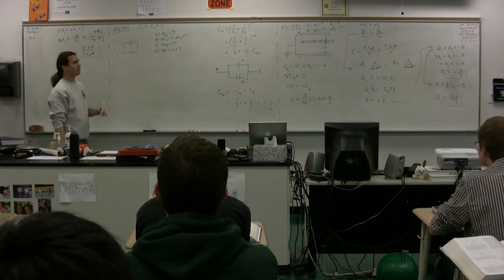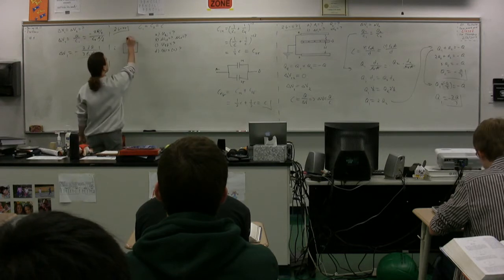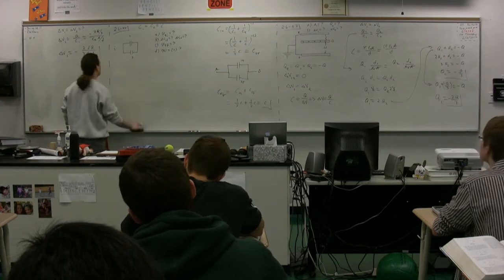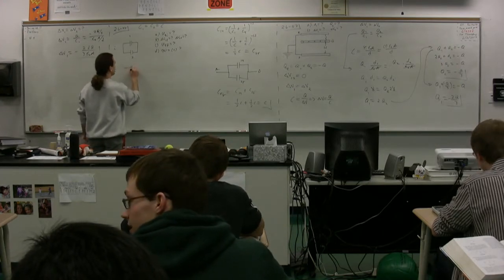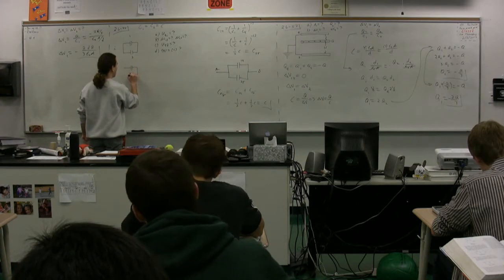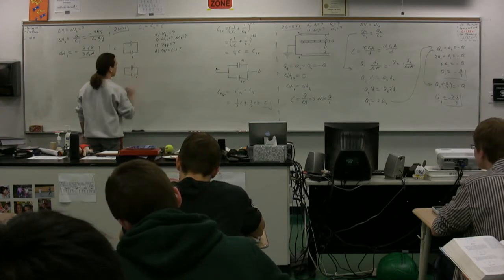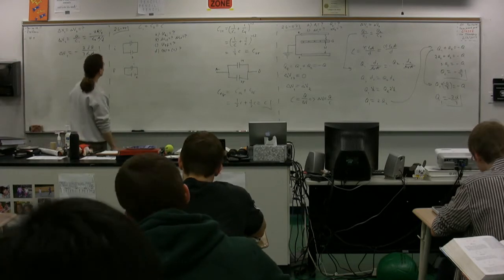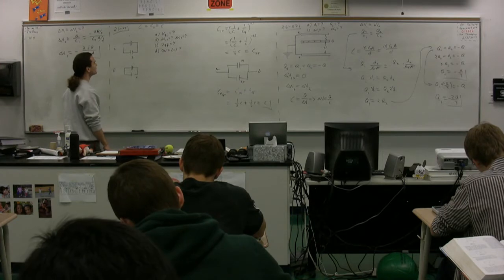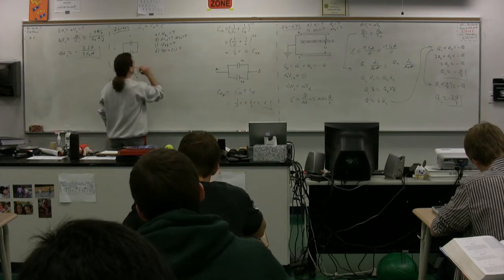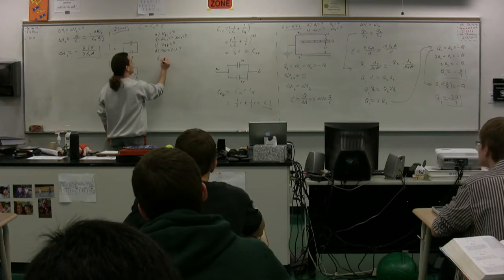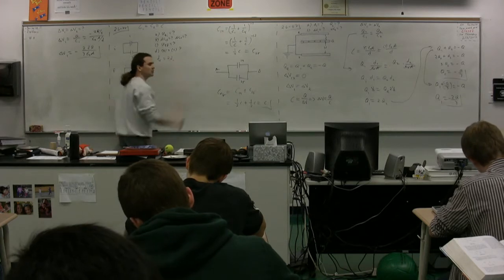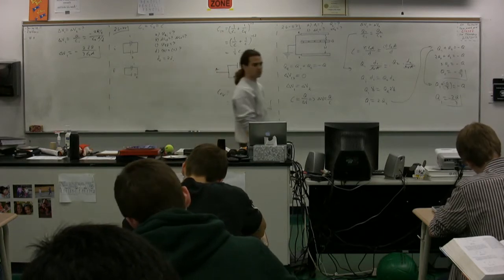Initially, we have two capacitors — capacitor one and capacitor two. We are going to increase the distance between the plates of capacitor two such that it has twice the initial plate separation. So D_final equals two times D_initial, where D represents the plate separation.